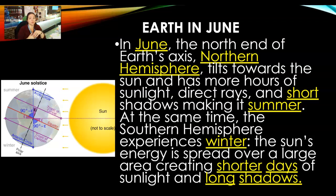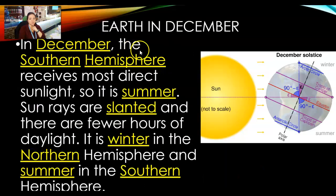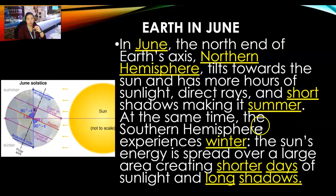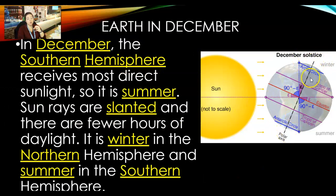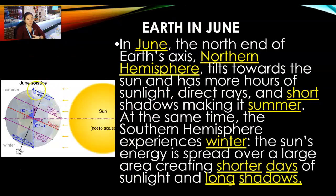When we're tilted towards the sun, we have more time in sunlight, more direct rays, and this causes a shorter shadow — it is summer. At the same time, in the southern hemisphere, they are experiencing winter because the sun's rays don't hit that section as directly. They have shorter days and longer shadows — that's winter. In December, the opposite happens: the southern hemisphere gets what the northern had, and the northern hemisphere gets longer angles of sunlight, meaning winter up here and summer down there.